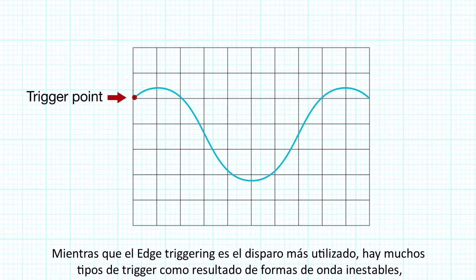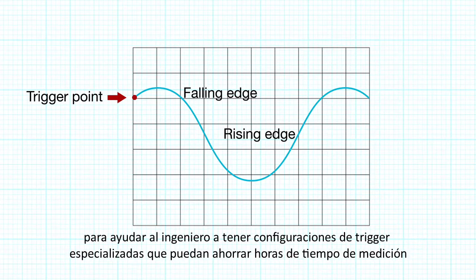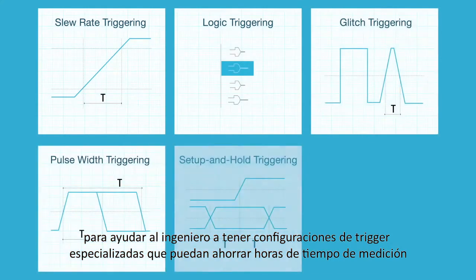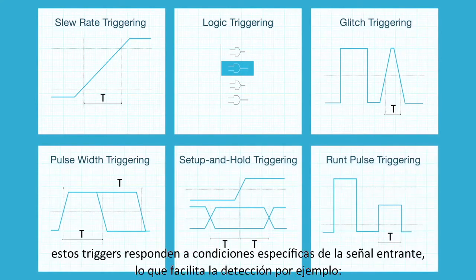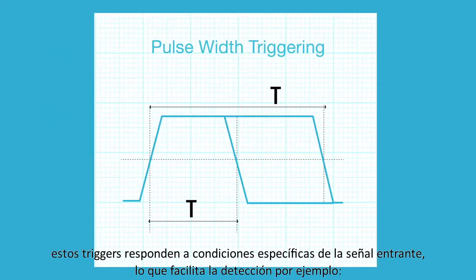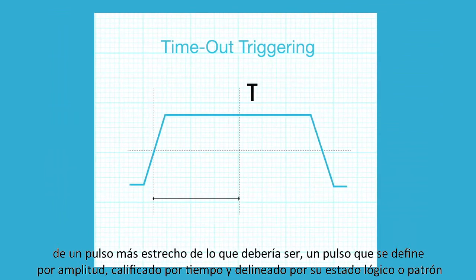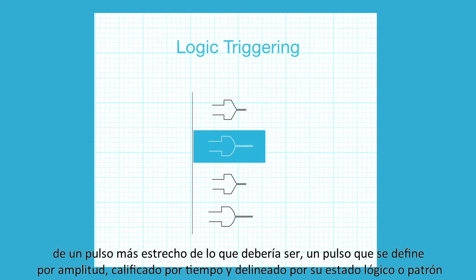While an edge trigger is the most commonly used trigger, there are many circumstances when this will cause too many triggers to occur, resulting in unstable waveforms. To help the engineer, there are specialized trigger settings that can save hours of measurement time. These triggers respond to specific conditions in the incoming signal, making it easy to detect, for example, a pulse that is narrower than it should be. You can trigger on pulses defined by amplitude, qualified by time, and delineated by logic state or pattern.